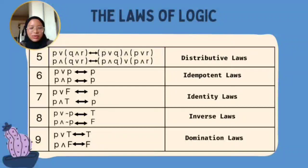The Domination Law states that if P or T, it becomes a tautology. But if P and F, it becomes a contradiction.